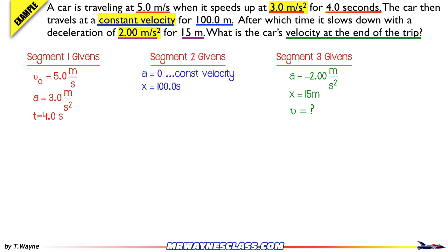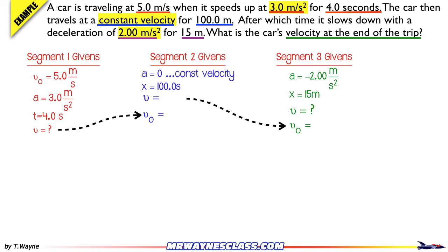Looking at the third segment, finding the final velocity would be easier if I had the time or the initial velocity for that segment. The key insight is that in a problem like this, where segments link up one after another, the final velocity for one segment becomes the initial velocity for the next. So the final velocity of the second segment becomes the initial velocity of the third segment — meaning I need to find the final velocity for the second segment first. And similarly, the final velocity of the first segment becomes the initial velocity of the second segment.